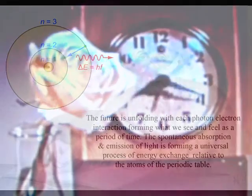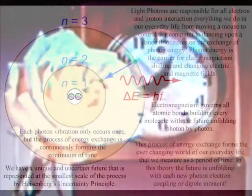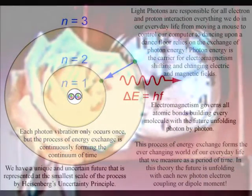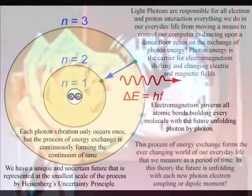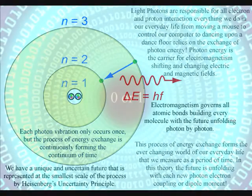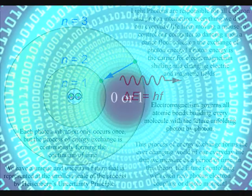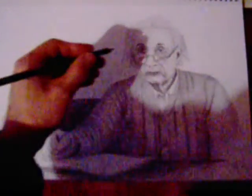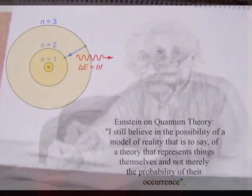We have the spontaneous absorption and emission of light, with each photon oscillation or vibration only occurring once, but with the process of energy exchange as a whole forming a unique and uncertain future, with the wave-particle duality of light and matter in the form of electrons acting like the bits or zeros and ones of a computer, forming a blank canvas that we can interact with forming the possible into the actual.